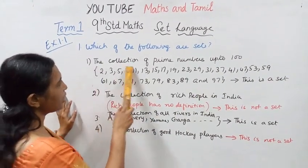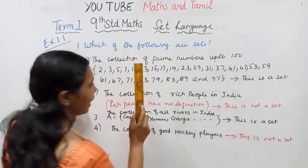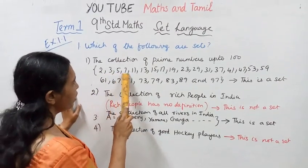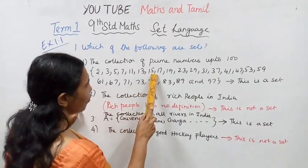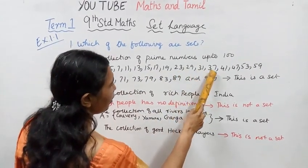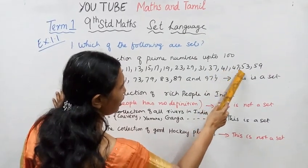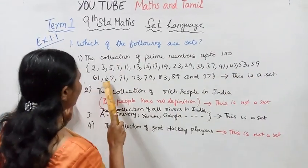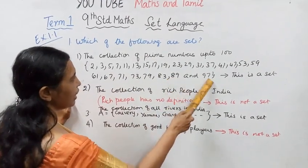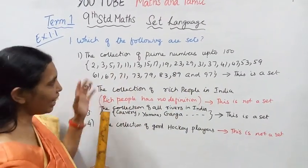The collection of prime numbers up to 100: 2, 3, 5, 7, 11, 13, 15, 17, 19, 23, 29, 31, 37, 41, 47, 53, 59, 61, 67, 71, 73, 79, 83, 89, and 97.